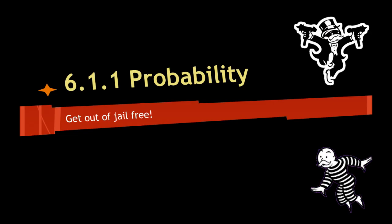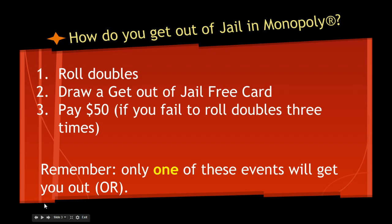So 6.1, first out of four content items — this is our get out of jail free question. We have those three possibilities: we can roll a double, we can get a get out of jail free card, or we can pay $50.